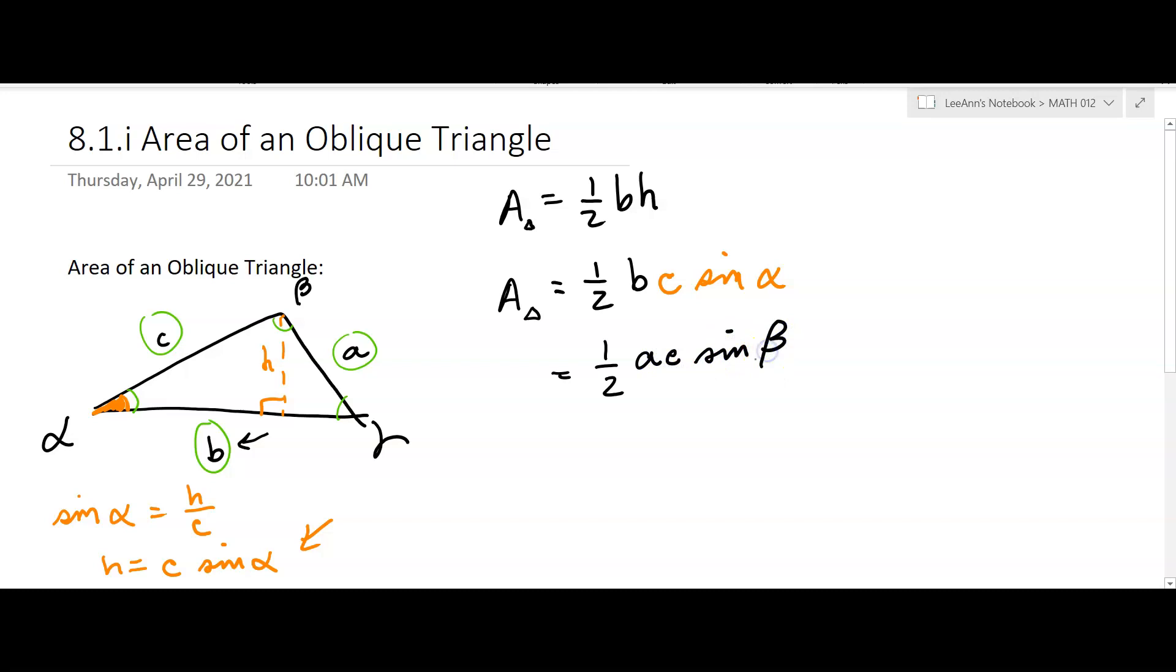sine beta, or the other one is one-half a B sine gamma. So those are the three formulas. My first one kind of looks funny, but it's one-half B C sine alpha. So depending on the angle they give you,